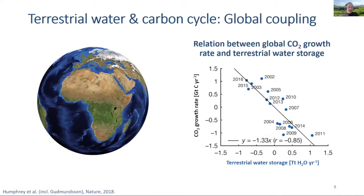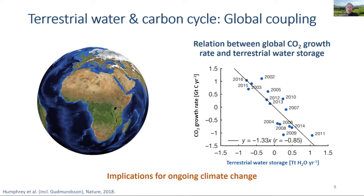Processes like this contribute to an overall global scale feedback that we discovered a couple of years ago, where we showed for the first time that the yearly CO2 growth rate in the atmosphere co-varies highly with anomalies in total terrestrial water storage — the total amount of water stored on land averaged over the entire globe. Recognizing these correlations, we can see this might have implications for ongoing climate change, especially since climate change is driven by increasing CO2 concentrations and is likely to affect terrestrial water resources.